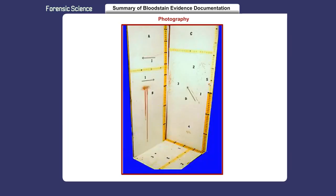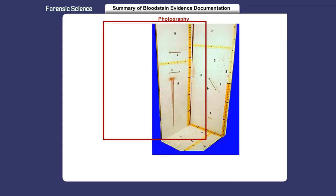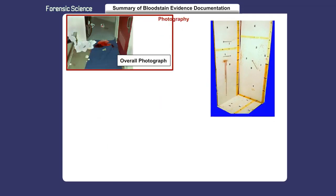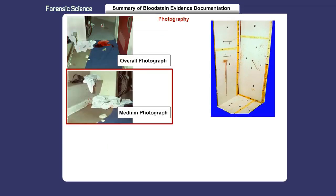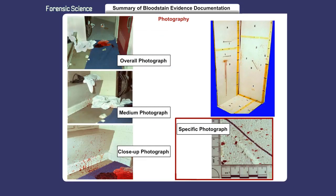One of the best ways to document bloodstain patterns is through photography. All bloodstain patterns need to be photographed showing overall, medium, close-up, and specific views. Enough photographs should be taken for a third party to understand and comprehend the patterns and their association to the scene and the persons involved.